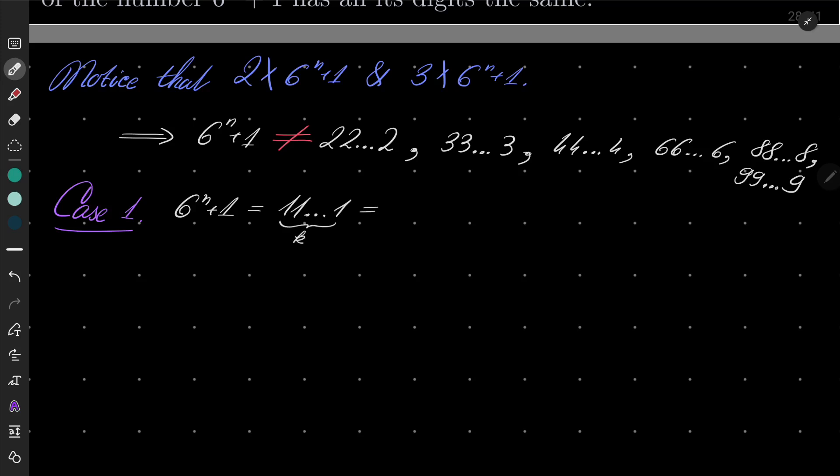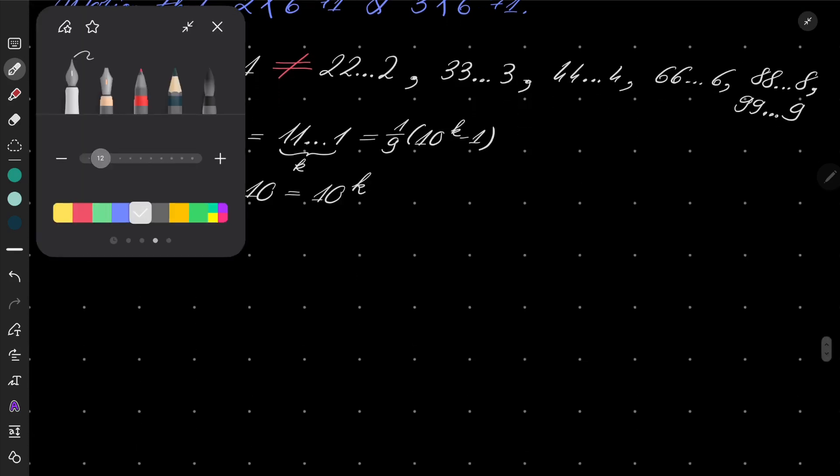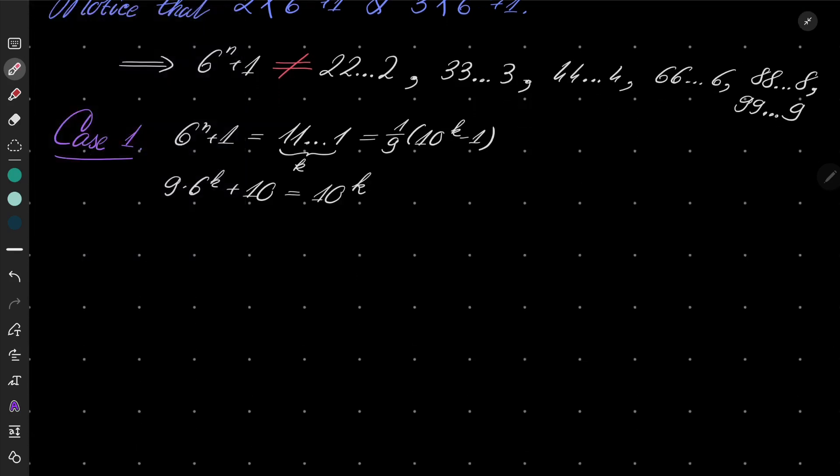As I suggested, it can be written as 1 over 9 times 10 to the power k minus 1. And now if I multiply both sides by 9, I have 9 times 6 to the power of n plus 10 equals 10 to the power of k.